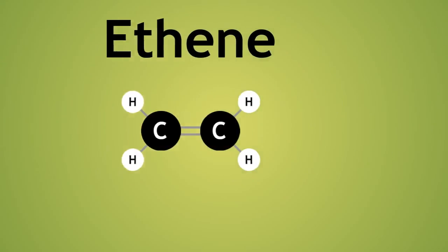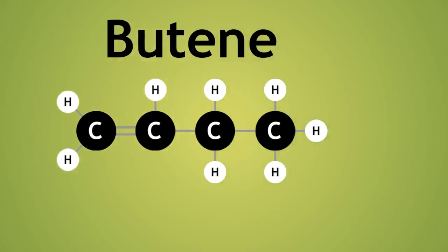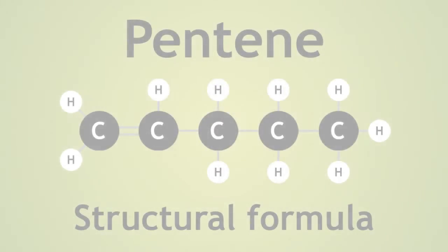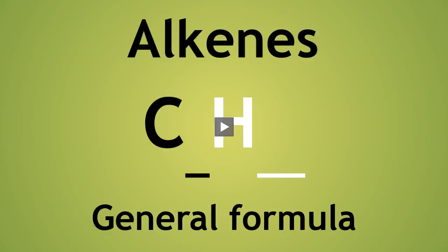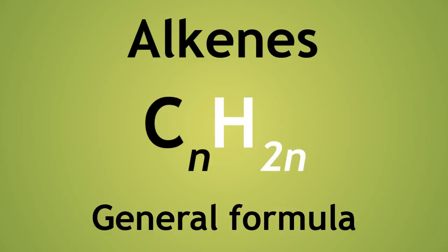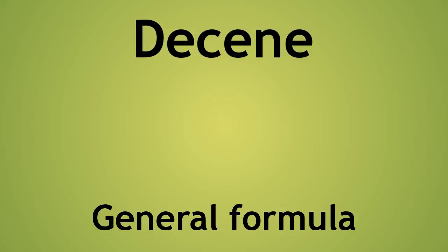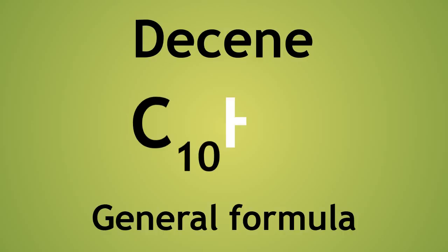Here are the structural formulas of the first 4 alkenes. Pause the video again and try to complete the general formula. What is the relationship between the number of carbons and the number of hydrogens? Hopefully you got the formula CnH2n. Quite simply, there is double the number of hydrogens than the number of carbons. So as an example for decene, the molecular formula would be C10H20.